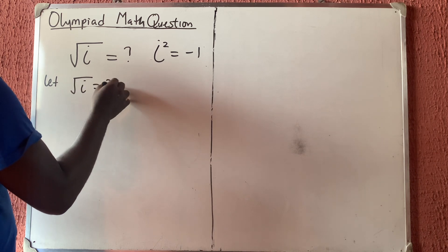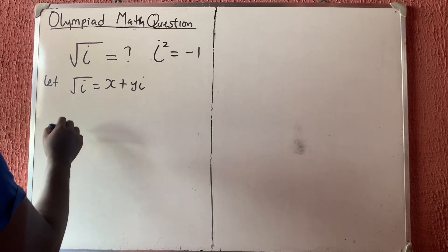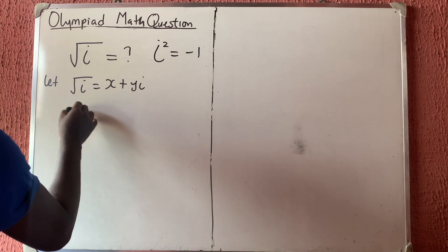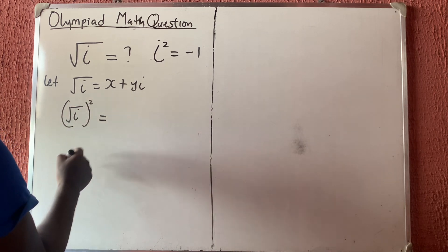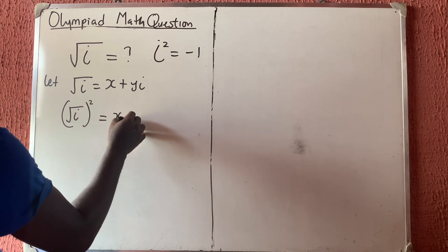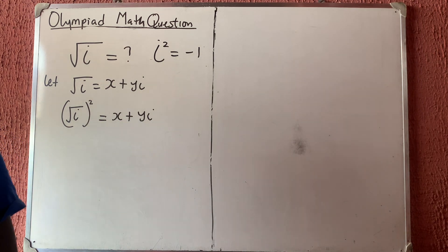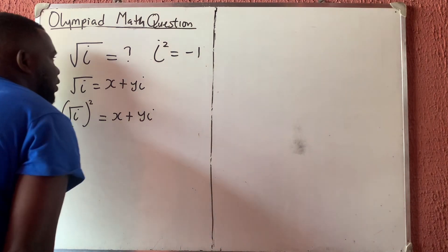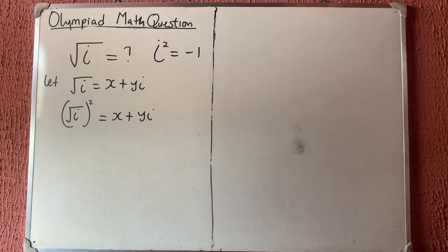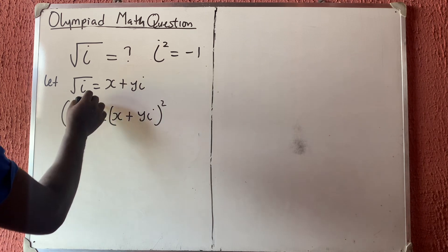Let's say the square root of iota is equal to a complete complex number, which is x plus yi. If we decide to square both sides, we have the square root of iota squared, which is equal to x plus yi, all squared.